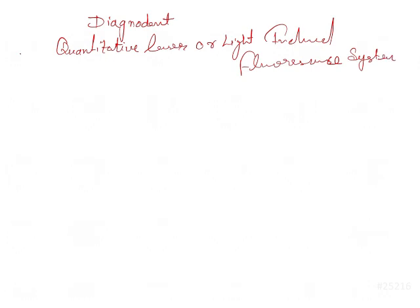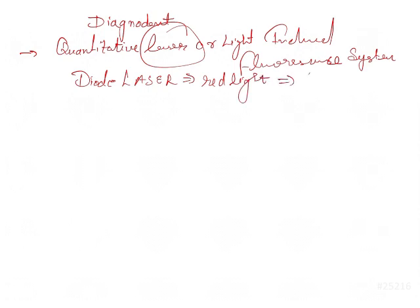Now what will be the light source? Yes, that can be laser or any light source. The diode laser is going to emit the red light, and it should fall in that wavelength. The wavelength is going to be 655 nanometers. That is important.